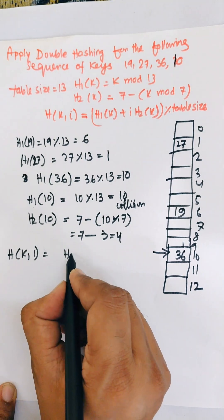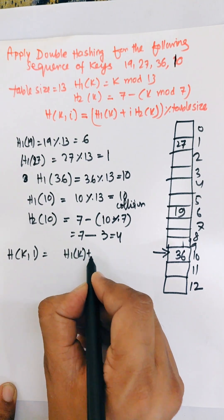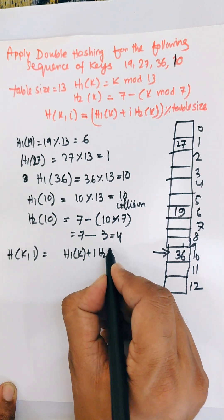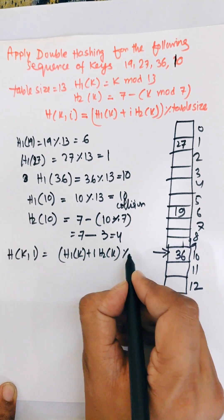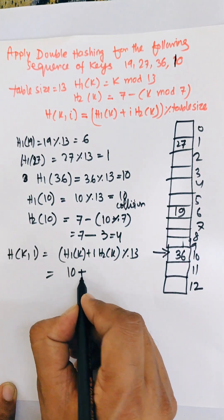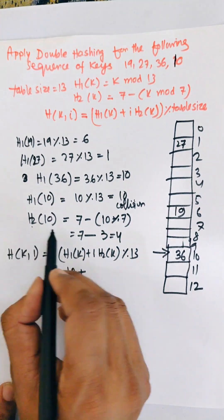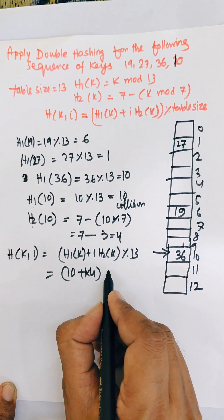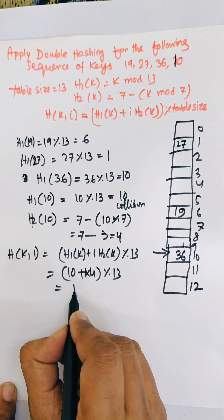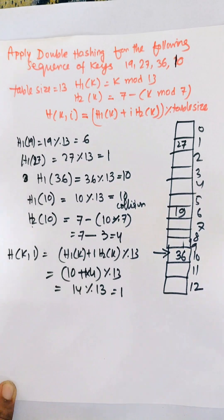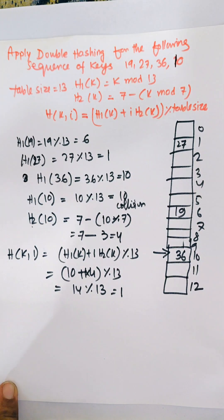Now we compute h(k, 1) = h1(k) + 1 × h2(k) mod 13 = 10 + 1 × 4 mod 13 = 14 mod 13 = 1. Location 1 is already occupied.